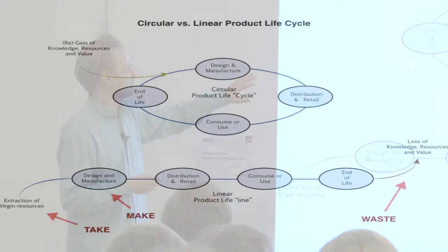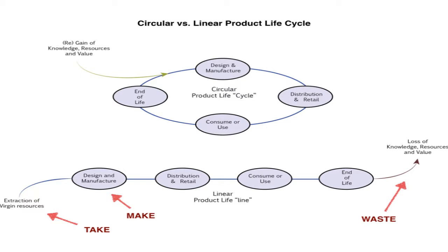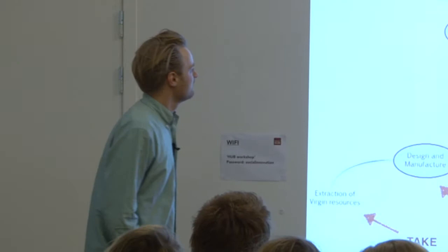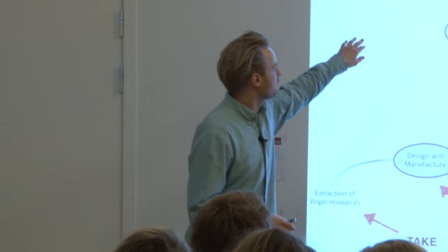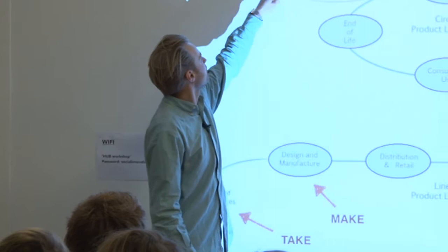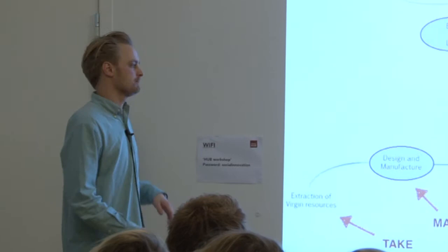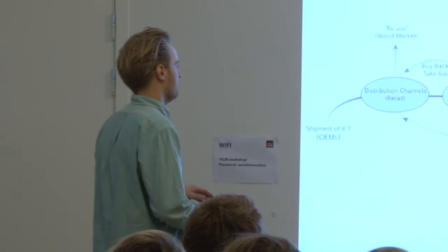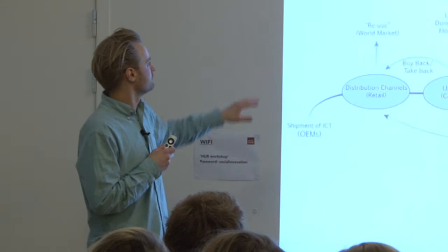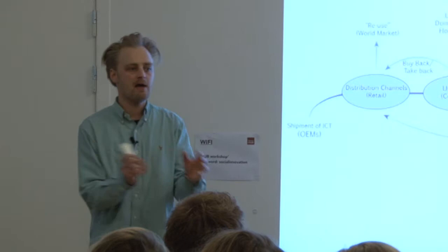The difference between the current and desired system: today we have a linear system where material is taken from Earth, designed, manufactured, distributed, consumed, used, and ends up in end of life somewhere — and some of the resources and value is lost. That's often termed the take-make-waste pattern. What I wanted to do is link these two ends back to each other — regaining knowledge, resources, and value back into design and manufacture. That's the simple idea — I then went about a long analysis of all the problems happening in this phase.